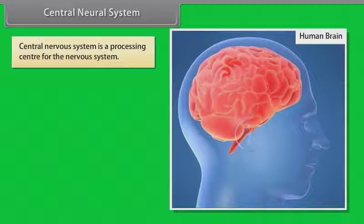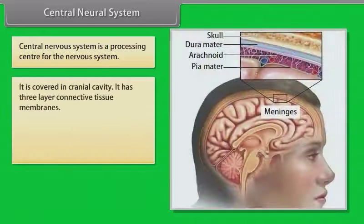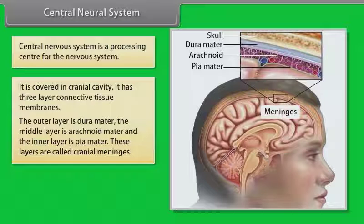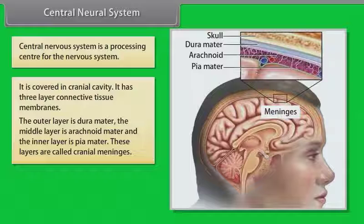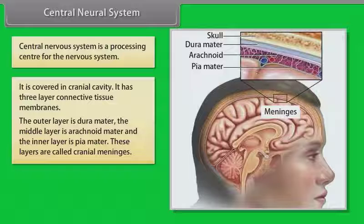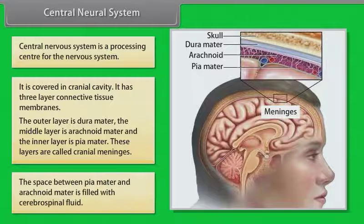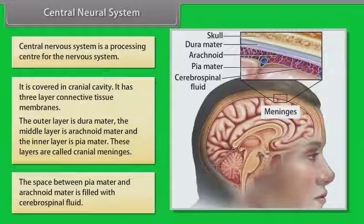Central nervous system is a processing center for the nervous system. It is covered in the cranial cavity and has three-layer connective tissue membranes. The outer layer is duramater, the middle layer is arachnoid matter, and the inner layer is pia matter. These layers are called cranial meninges. The space between pia matter and arachnoid matter is filled with cerebrospinal fluid.